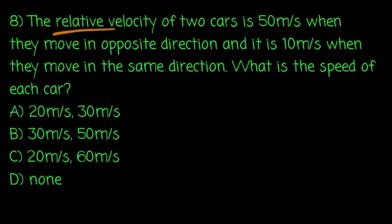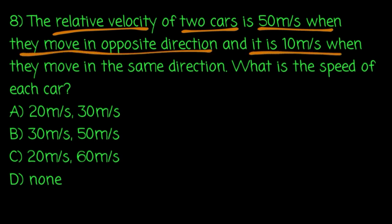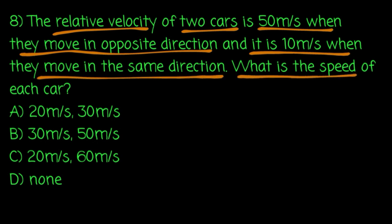The relative velocity of two cars is 50 m per second when they move in opposite directions, and it is 10 m per second when they move in the same direction. What is the speed of each car?